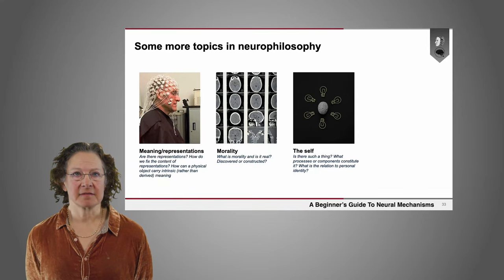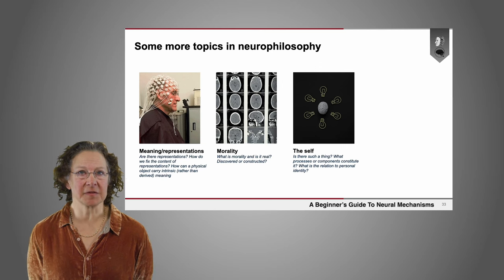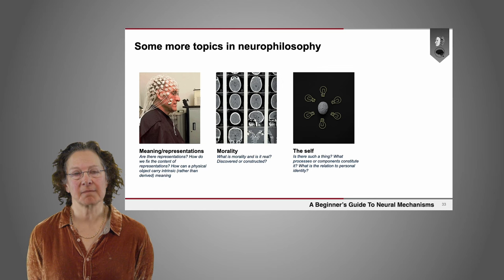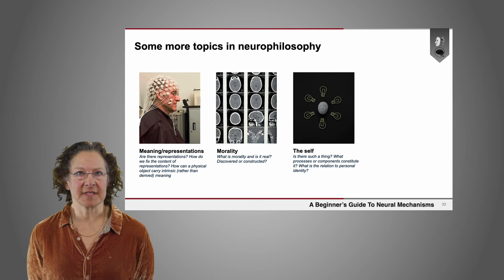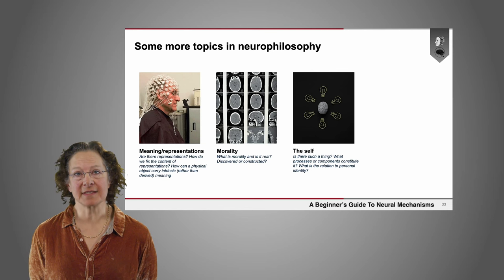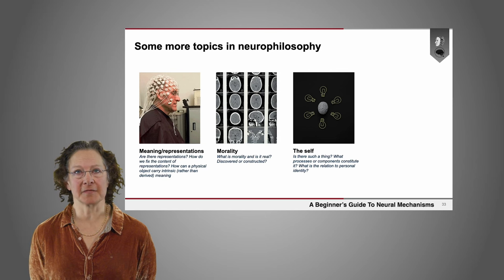Other questions include things like meaning and representations. Are there representations in the brain? How do we fix the content of those representations? How can a physical object carry intrinsic rather than derived meaning? As well as the nature of morality — is it real? Is it something we can discover, or something we construct? Understanding the nature of morality and how our brains compute or process moral questions is another problem that many neurophilosophers think about.